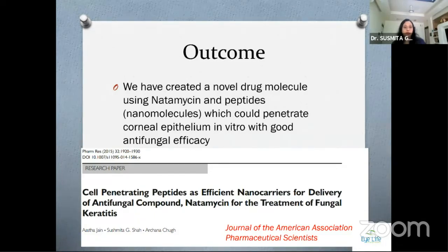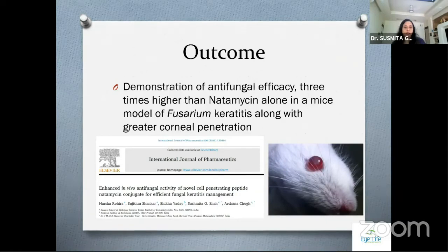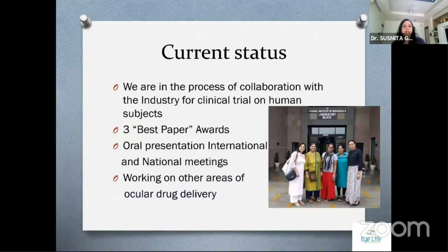Next came the challenge of demonstrating the same efficacy in vivo in animals. After a long wait of almost three years, we found collaborators from the National Institute of Biologicals, NOIDA — an excellent government-run animal lab — and were lucky to get funding from the DST. We started this work in 2017 and concluded last year. We successfully demonstrated that the antifungal efficacy of our natamycin conjugate was three times higher than natamycin alone, with much higher corneal penetration. This paper was published last month, and we are now in the process of collaborating with industry for a clinical trial in humans.